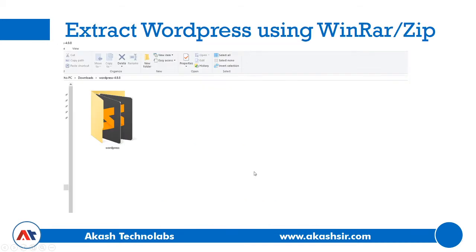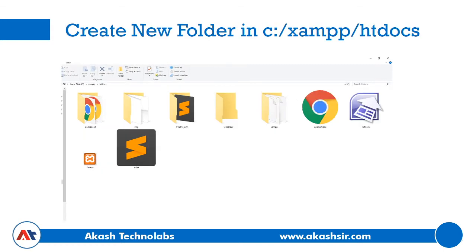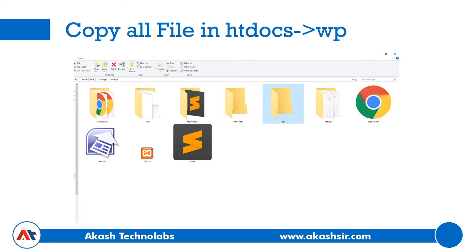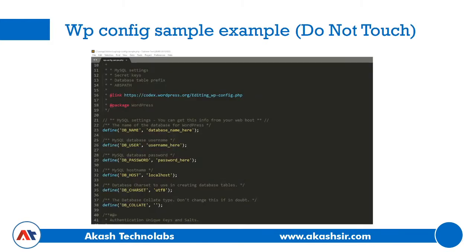Once you download the setup, extract it with WinRAR or WinZip. You will get a folder containing many files and folders: wp-admin, wp-content, wp-includes, and other PHP files. Next, you need to create one folder in your C drive under XAMPP/htdocs — name it 'wp' — and paste all the extracted files inside this wp folder. There is a wp-config file and right now there's no database name, username, or password specified.